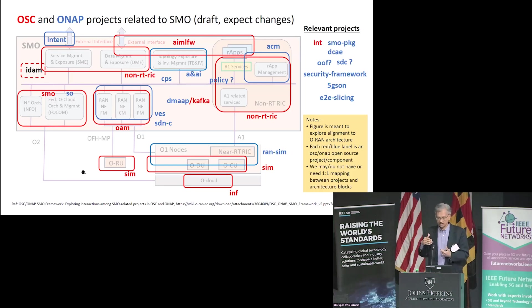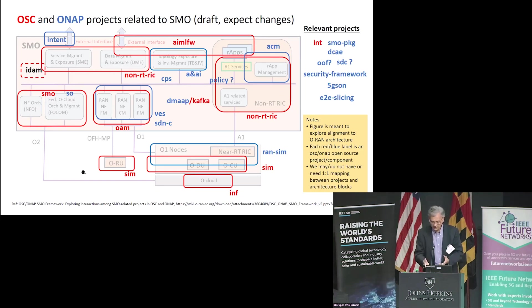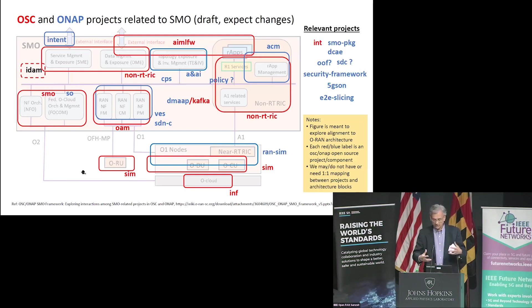Coming back to this draft view of the SMO architecture, this is where a lot of open source activity is happening. The blue text represents OSC projects and the red text represents ONAP projects. As you can see, it's working on different parts of what I showed before in the SMO — some of it fits in, some overlaps outside, and there are some gaps. For example, there is a project in ONAP on intent-based management, which you see on the top left. The non-real-time RIC is a project, OAM is a project, and the OAM project overlaps and harmonizes with the VEST project and the SDNC project from ONAP.